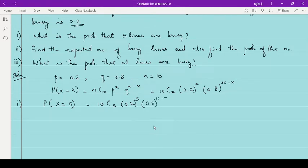So 10 minus 5 means it is 5. So simplifying this you will get the answer for that. That is 10C5. 10C5 you know how to calculate: 10 into 9, 8, 7, 6,